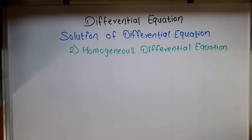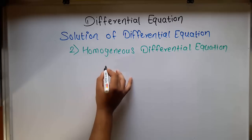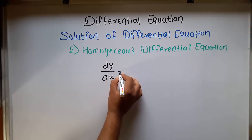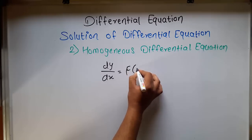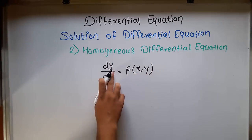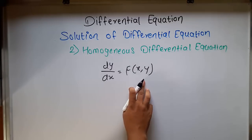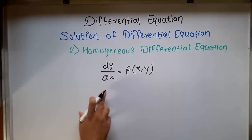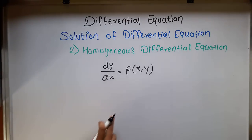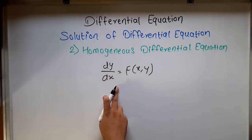Welcome to the next session on the solution of differential equations. In this session, we study the second method to find the solution of a differential equation — the homogeneous differential equation. If we write dy/dx equal to f(x, y), meaning dy/dx is a function of x and y, this function is said to be homogeneous if the equation has the same degree in all terms.